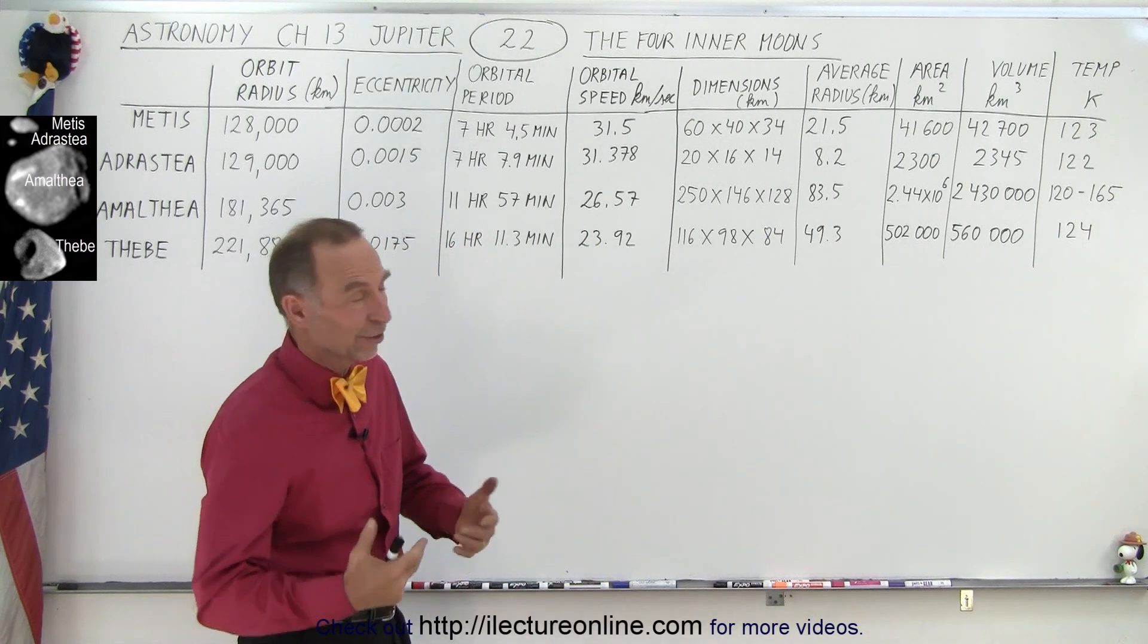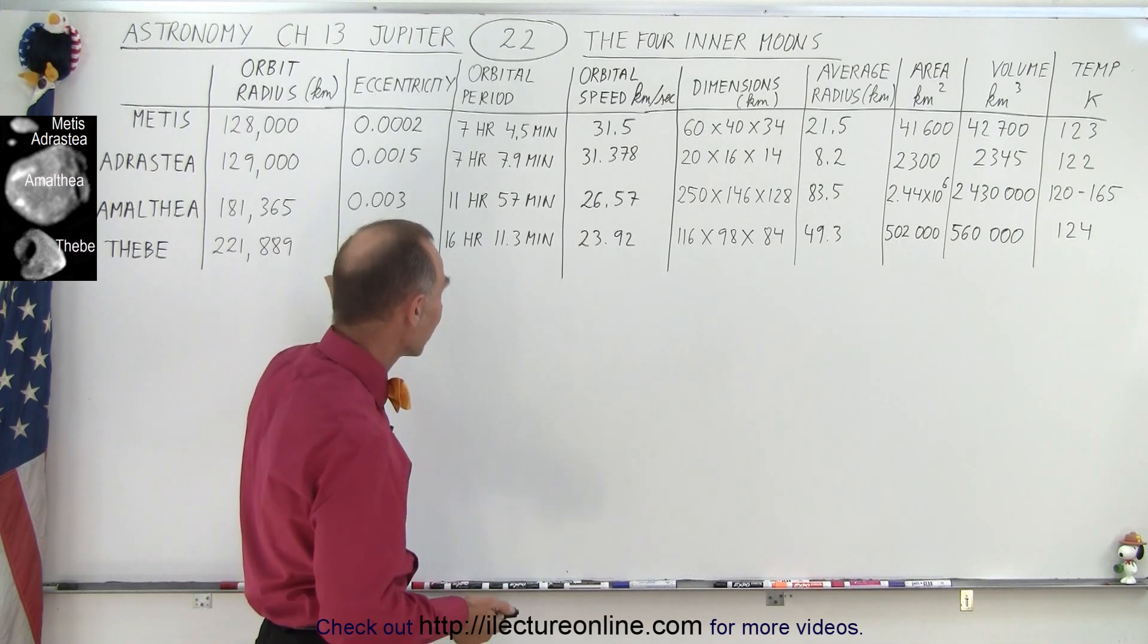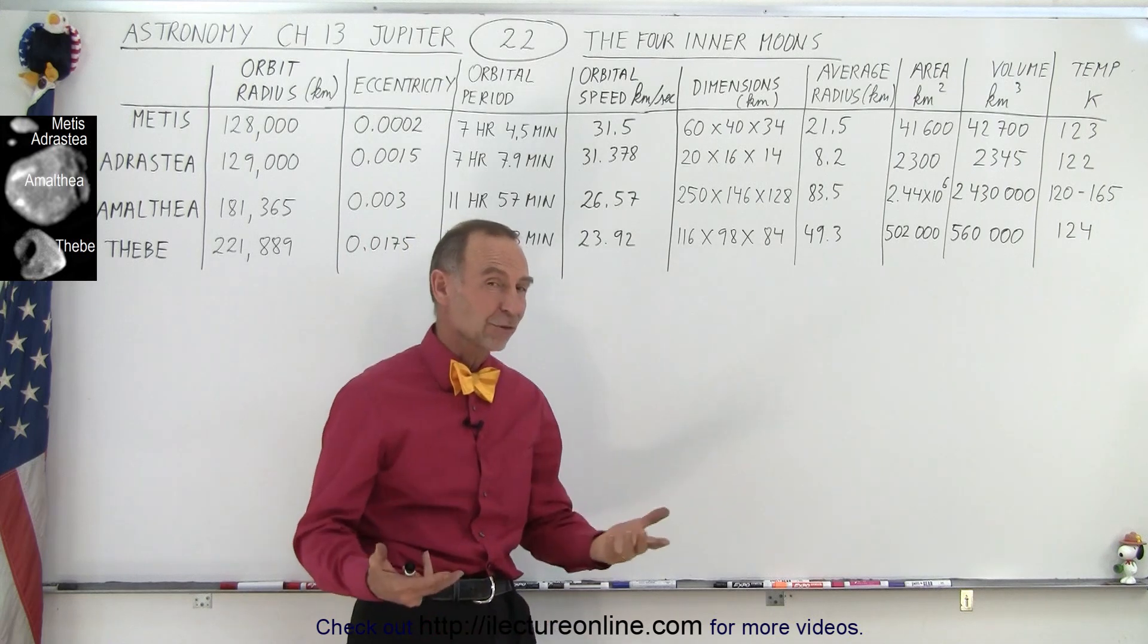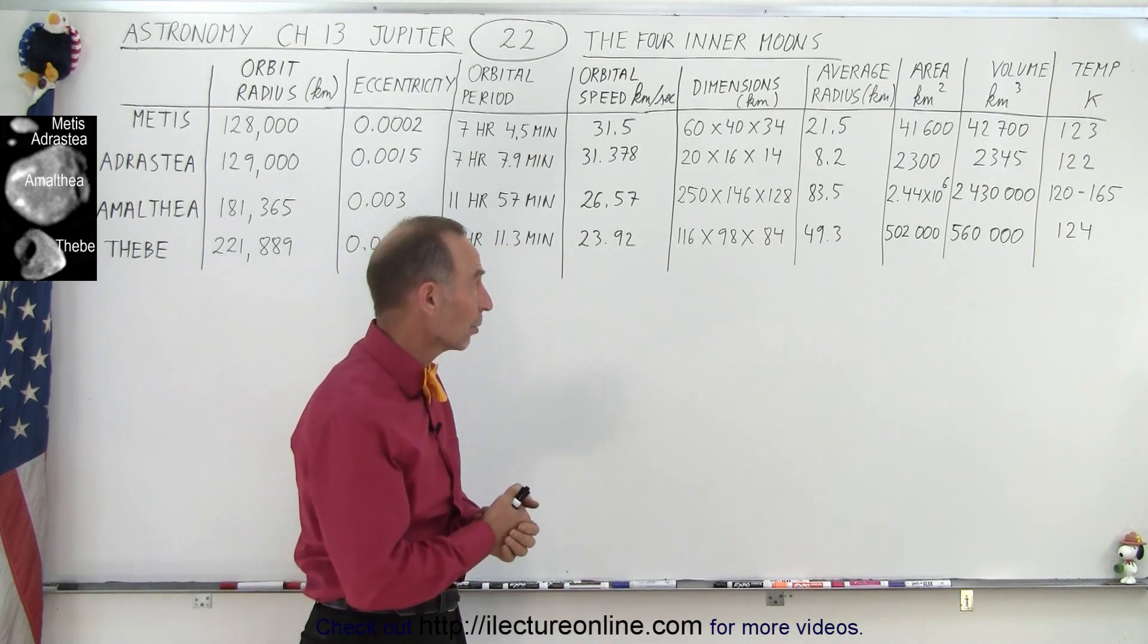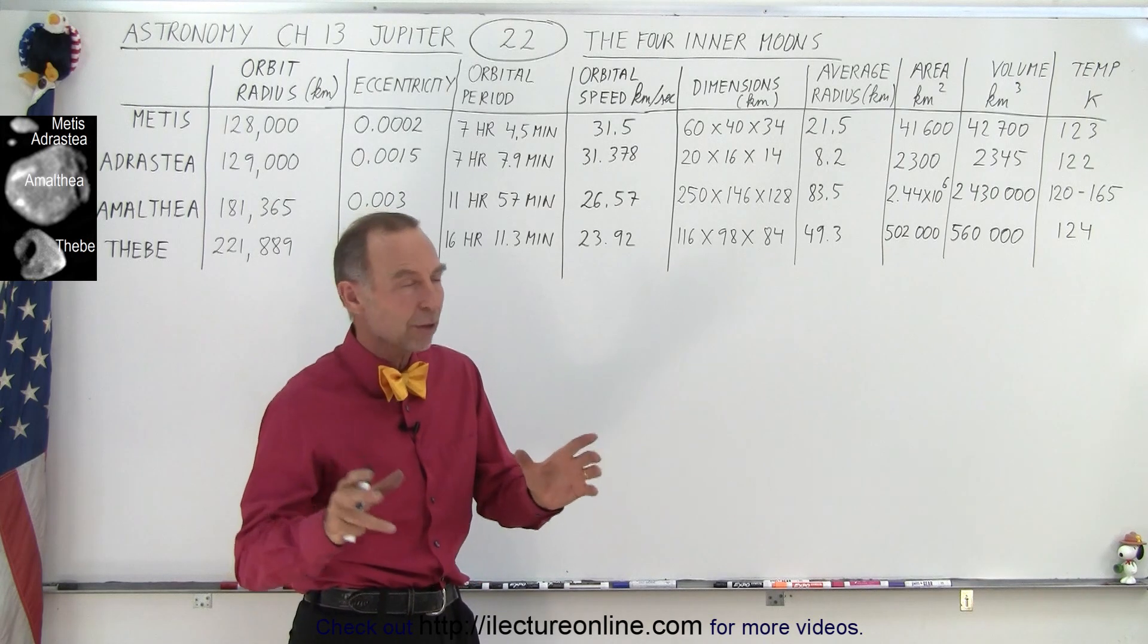So again, there's always more information to be gathered, more understanding to be had. But simply, again, by looking at this information, you're realizing that these are simply asteroids captured by Jupiter, as are the other 72 smaller moons.